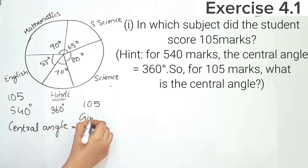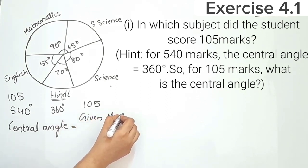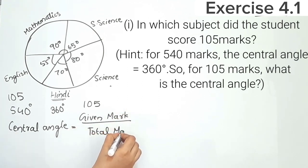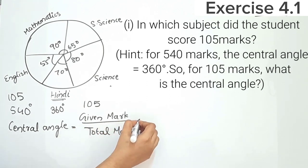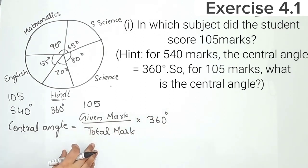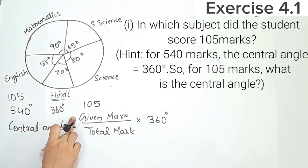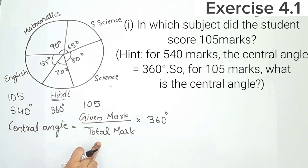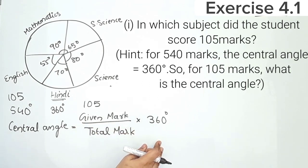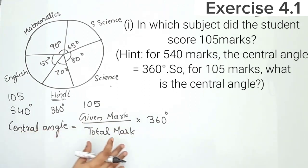The central angle is calculated as: given mark divided by total mark — that is a fraction — multiplied by 360 degrees. So the formula is: central angle equals given mark divided by total mark, into 360 degrees.